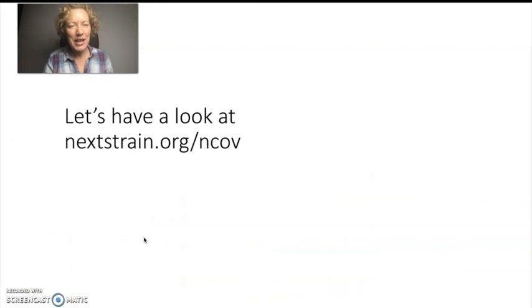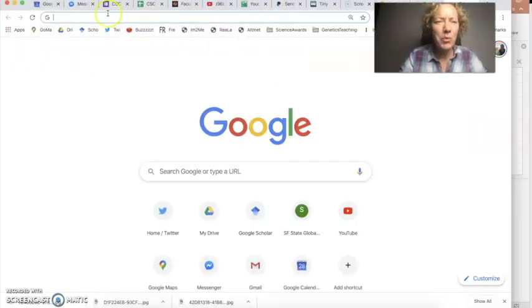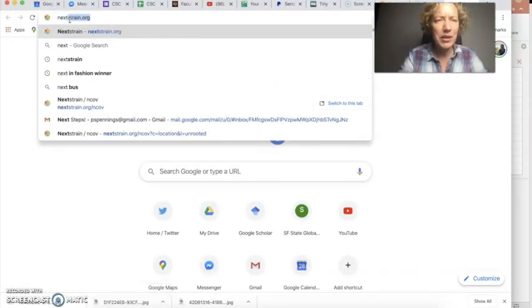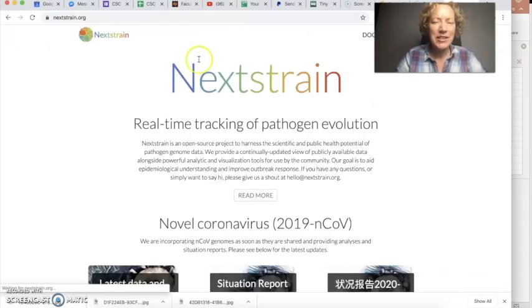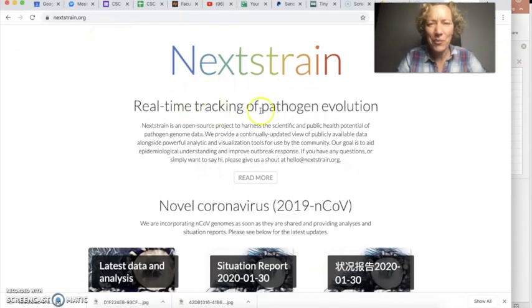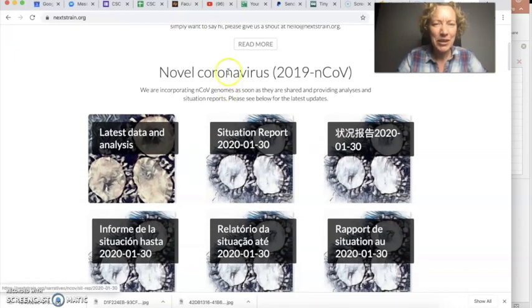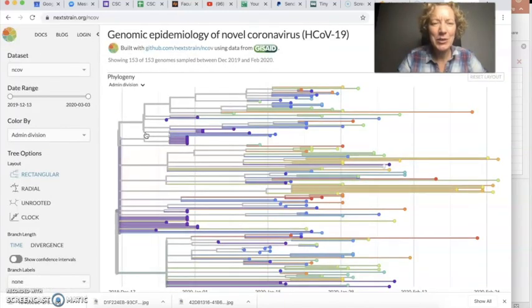Okay, let's have a look at nextstrain.org. That's a website that was actually built by Trevor Bedford and colleagues. And it's used to track viruses as they evolve and spread around the world. I'm going to open up a new browser window and open nextstrain. And so it says real-time tracking of pathogen evolution. We can go here, novel coronavirus is the first thing on the website because everyone is looking at it. I'll go to latest data and analysis. So what you see here is a phylogeny. It's showing 153 of 153 genomes.